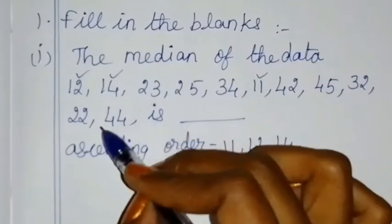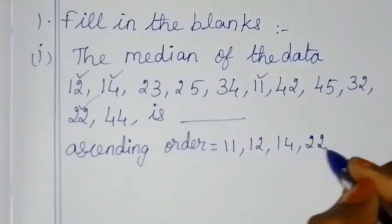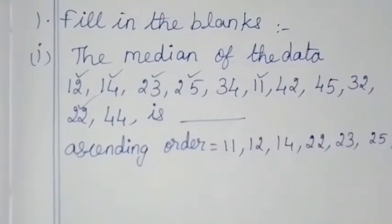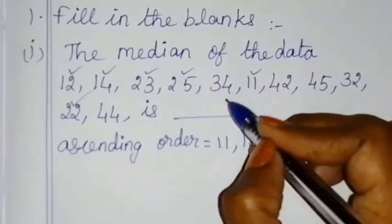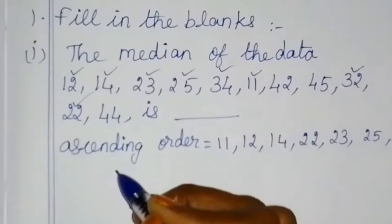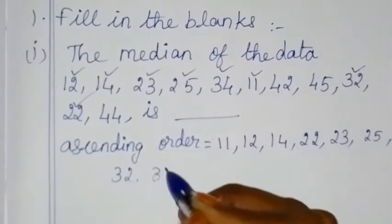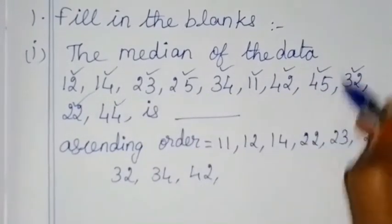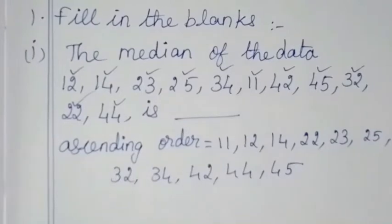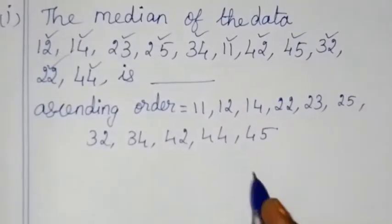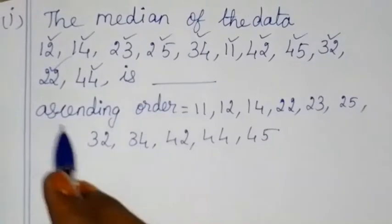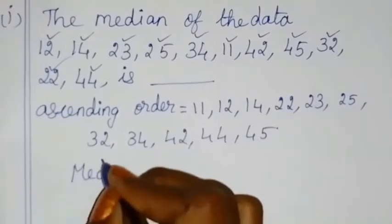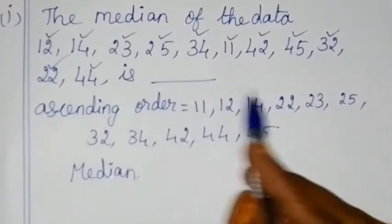Continuing the ascending order: 20, 22, 23, 25, 30, 30, 32, 34, 44, 44, 45, 45, 46.